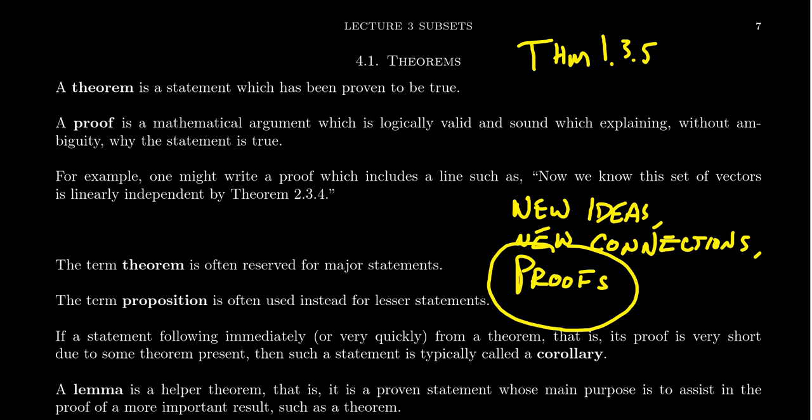So an example of this might look like something like the following, for which now we know that this set of vectors is linearly independent by theorem 2.3.4. This sentence is ripped right out of my linear algebra textbook called Linear Algebra Done Openly. And so this is an actual theorem in the book and we've established the linear independence of vectors by that theorem. So this is how we write mathematics. We reference a theorem that just has a number to justify a later result. So it's important to number our theorems and to give them proofs.